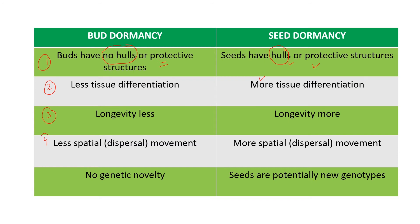Fourth point: there is less spatial movement in dispersal from buds, but seeds have more spatial movement because some seeds have wings. Where they are born, they travel to far areas because of the wind. So where they are born and where they germinate can be different areas.